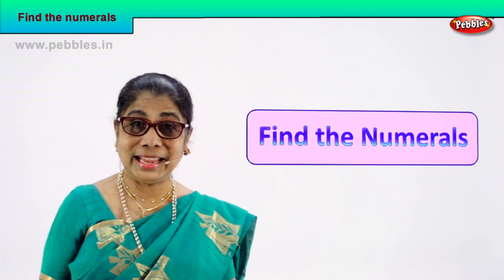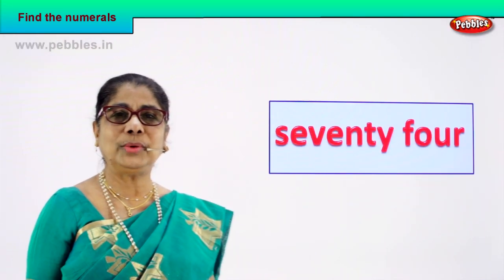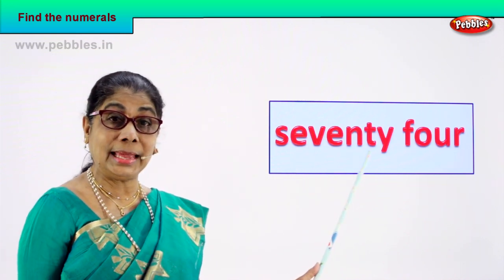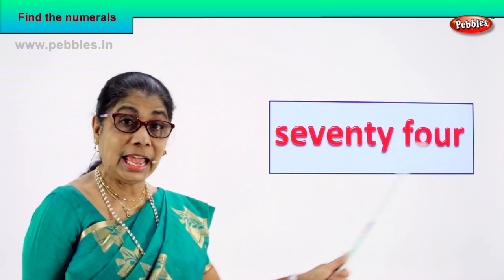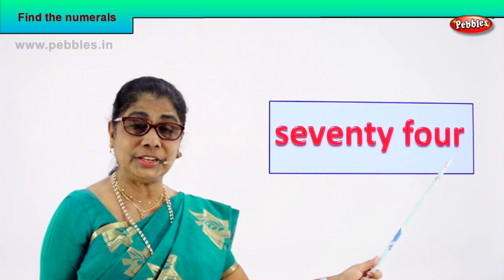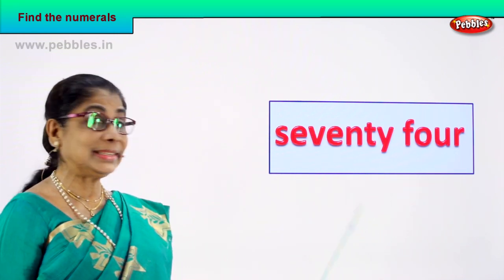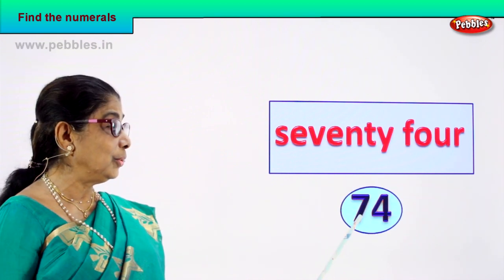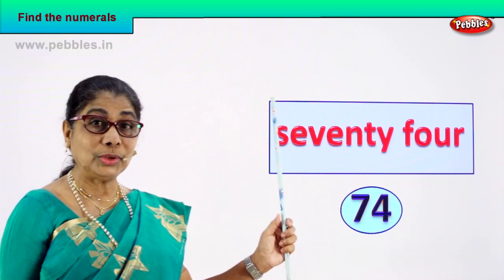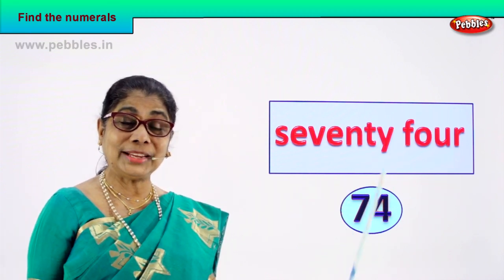Shall we take our first number name? Spell aloud and then get the numeral correctly. S-E-V-E-N-T-Y, 70. F-O-U-R, 4. Seventy-four, 74. Seven and four — seventy-four. So with the name, you matched the numeral. Very good.